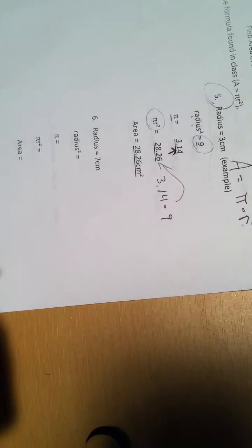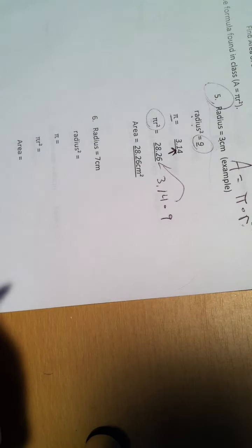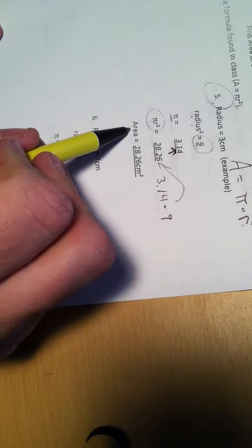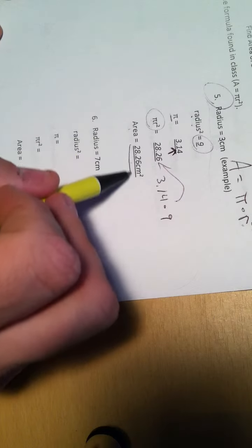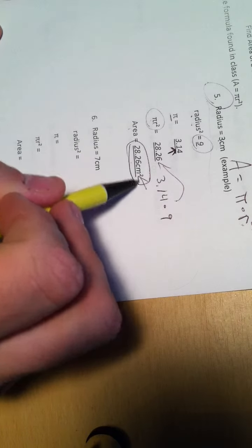Then, something that we forget often to do, go back and actually write down what is the area of the circle. It's going to be 28.26, which is what I've got for my formula, centimeters squared. Don't forget that part.